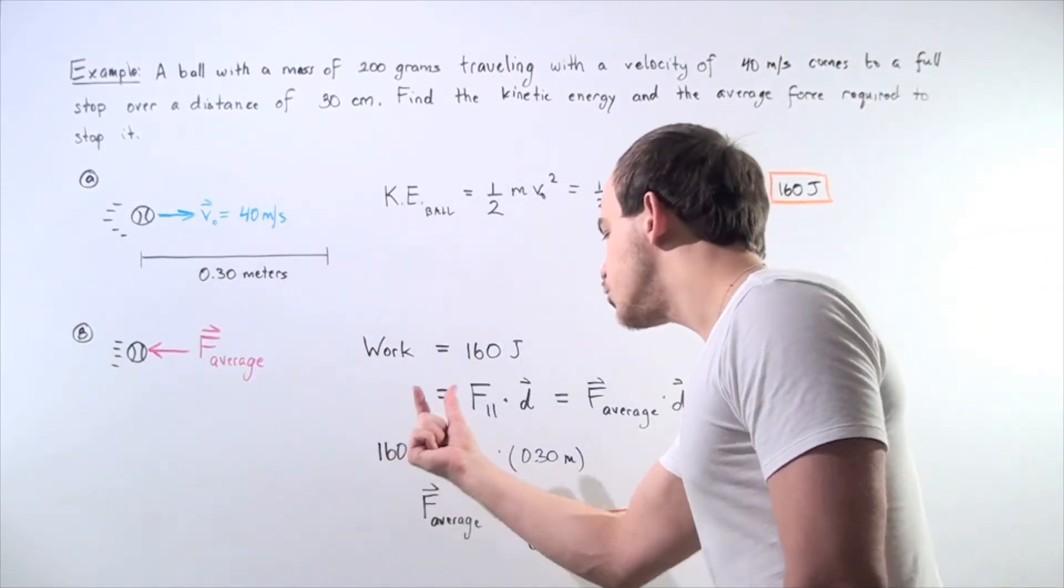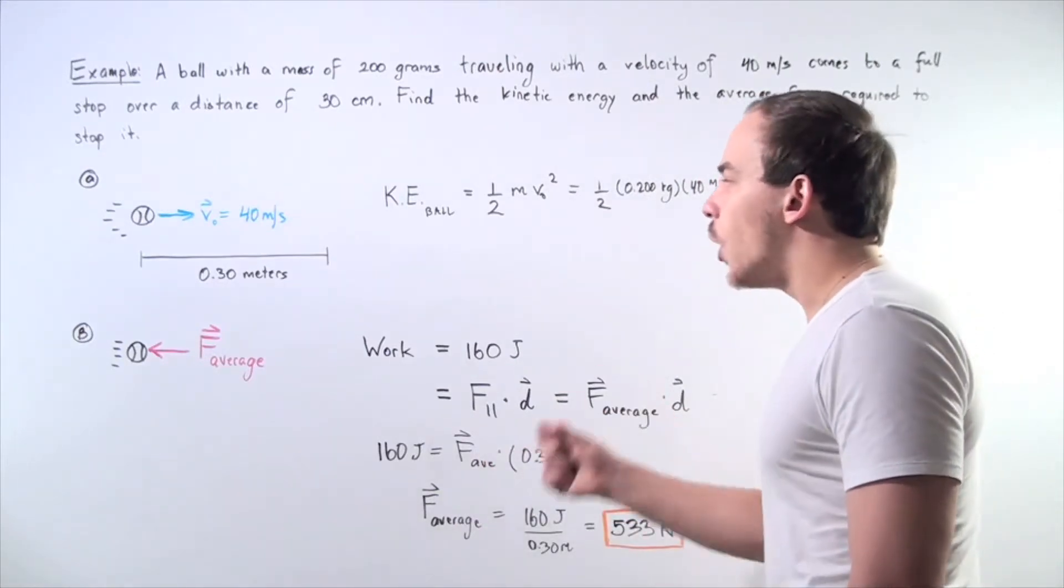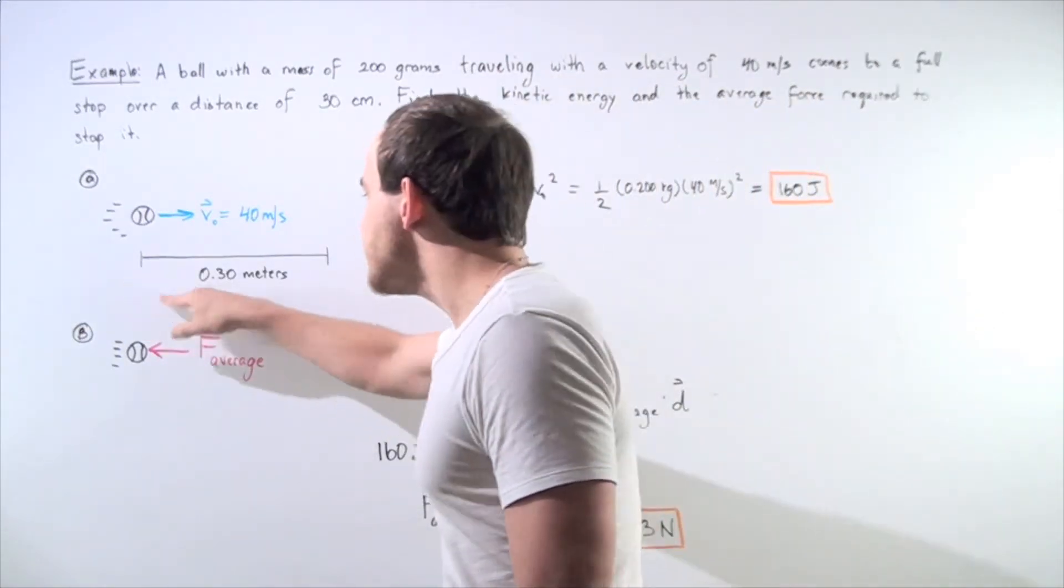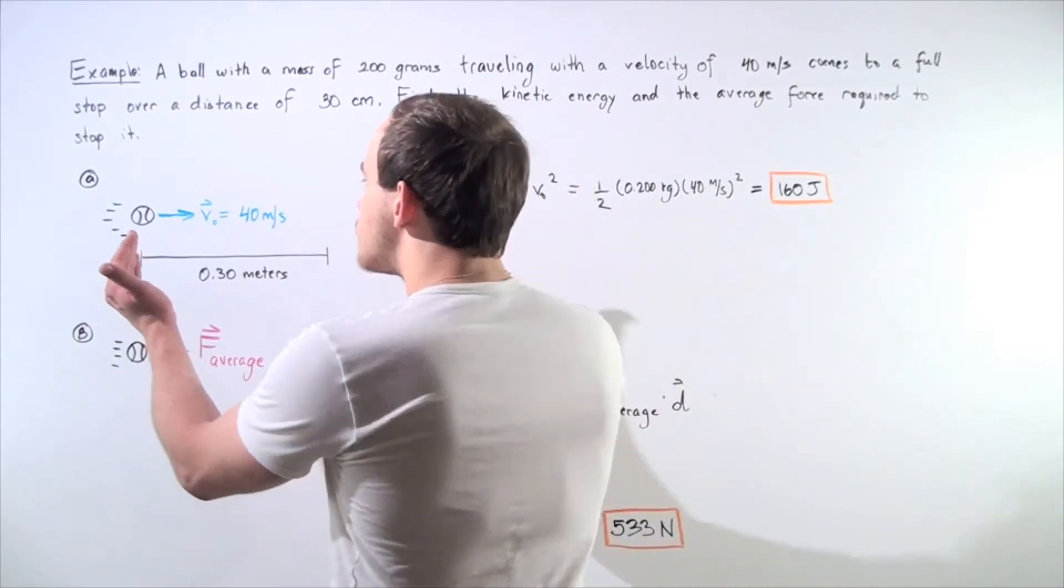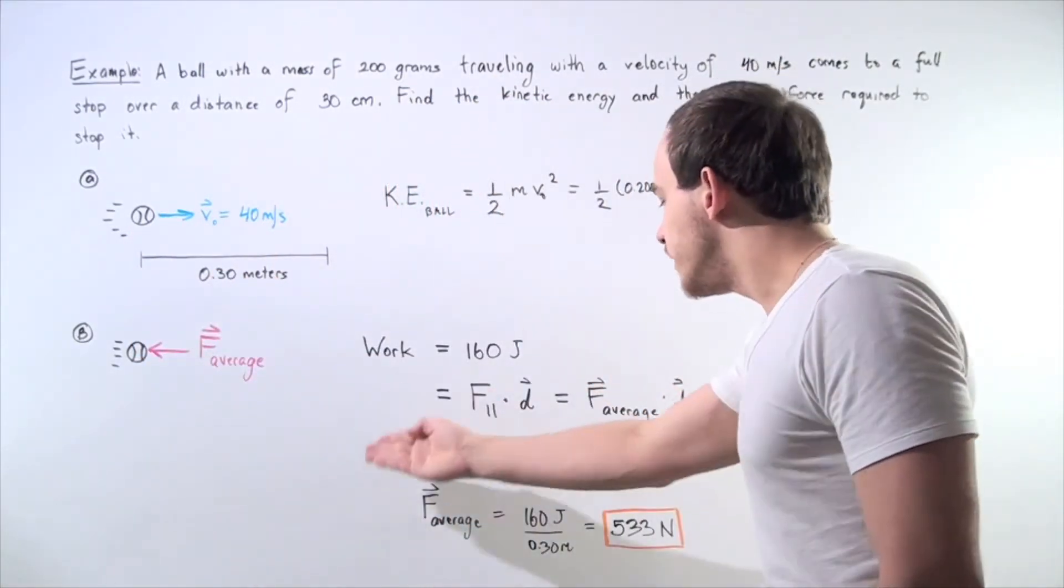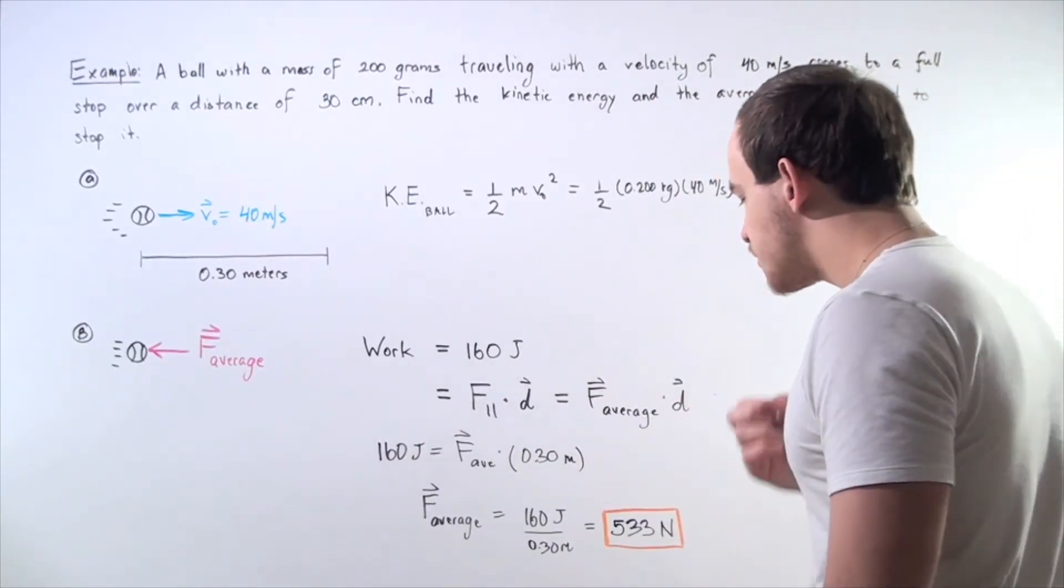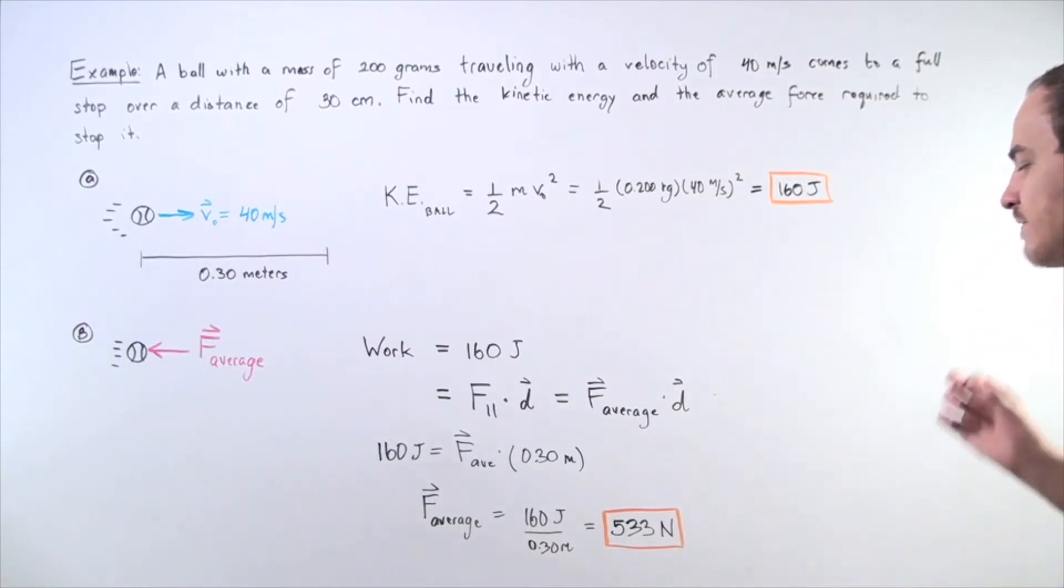160 joules of work equals our average force multiplied by our displacement over which our average force acts to stop our object. We divide both sides by 0.3 meters and we get an average force of approximately 533 newtons.